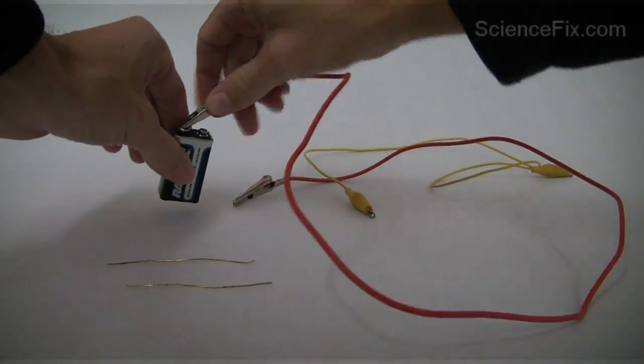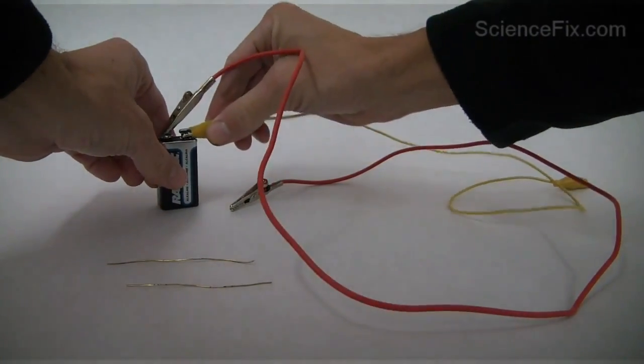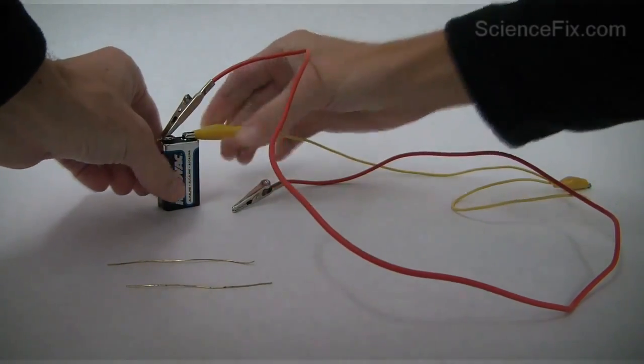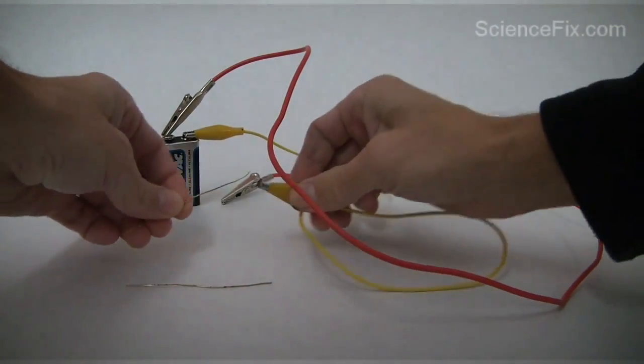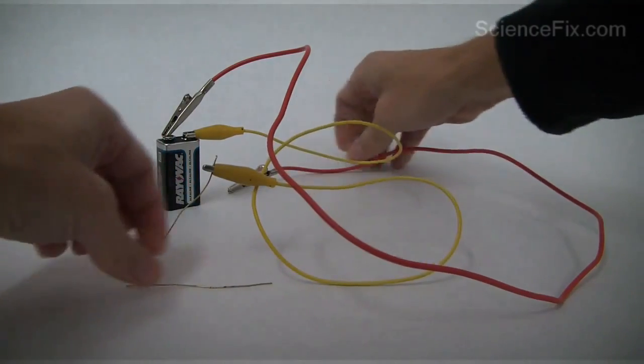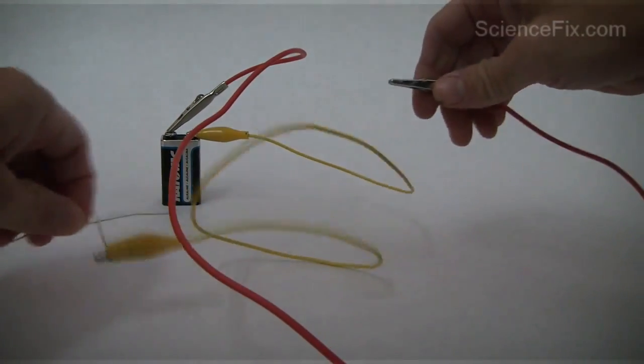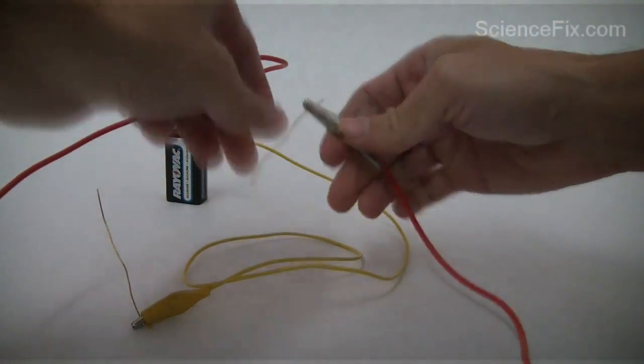Now there's another way you can show water undergoing electrolysis. You can take the same nine volt battery, hook up two wires to it, and then at the end of the two wires you attach either brass wires or copper wires.